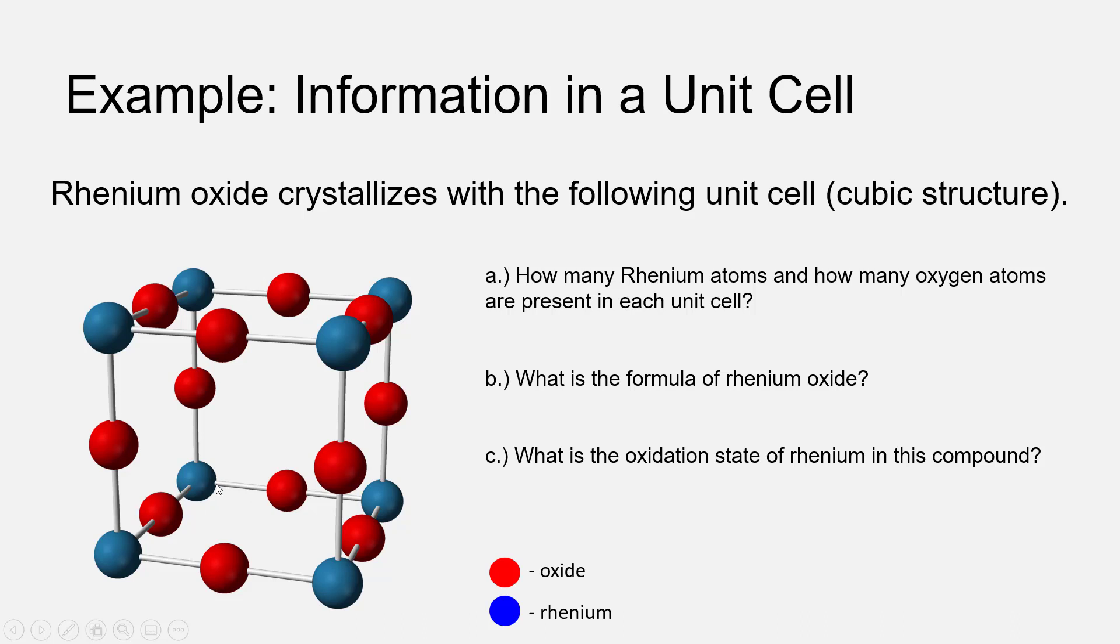So if we have eight corner Rheniums, one-eighth of each atom lies inside the unit cell, and so as usual, that's eight times one-eighth, which equals one Rhenium atom inside the unit cell.